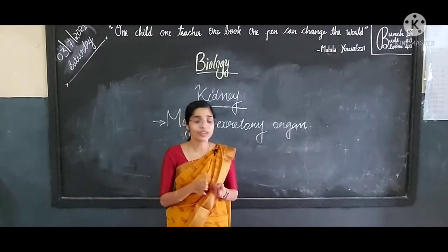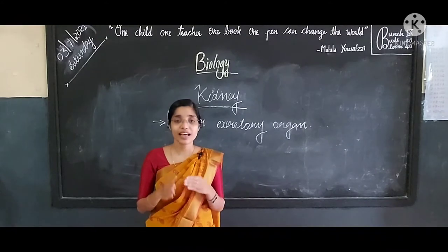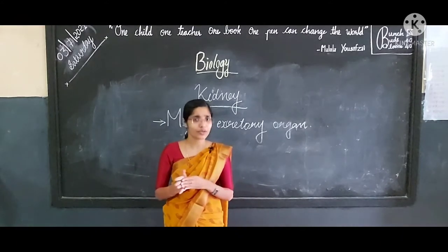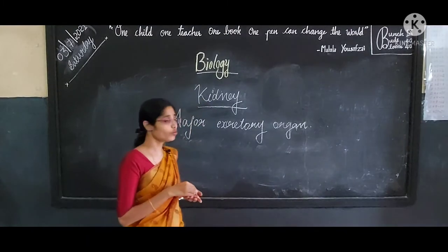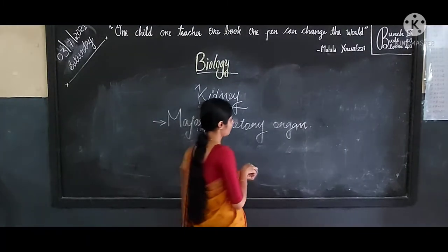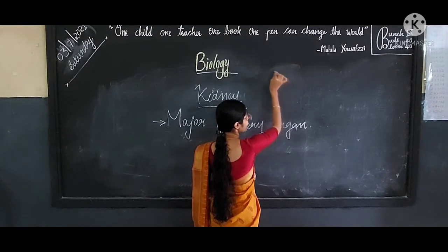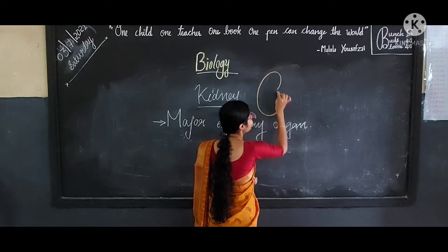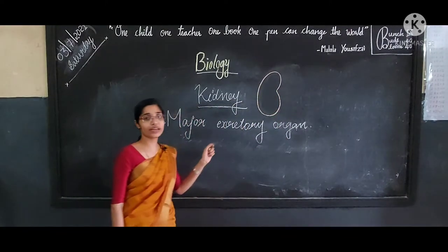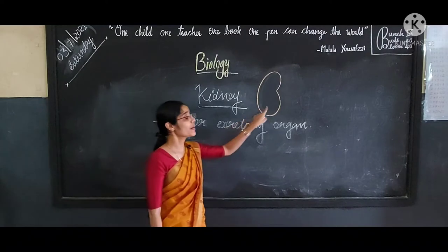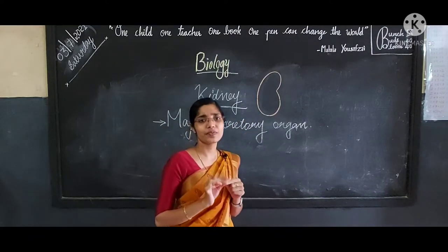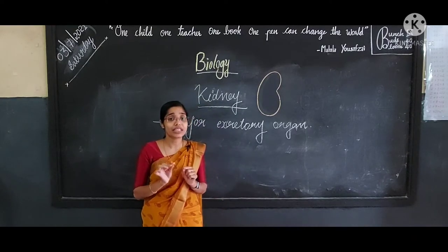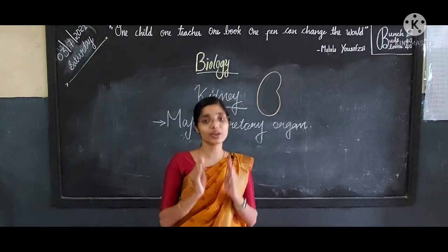Each kidney is about 5 cm wide and 2-3 cm thick with an average weight of 120-170 grams. We have gone through a video which depicts the position as well as the shape of kidney. Let me explain it once again. Kidneys are bean-shaped. They are located in the abdominal cavity on either sides of the vertebral column.